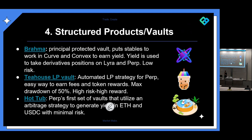Another one is the Teahouse LP vault — one of our partners who built an automated liquidity provision strategy for Perp. It's an easy way for anyone unfamiliar with providing liquidity on Uniswap V3 to simply deposit to the vault and earn a share of trading fees and token rewards. However, this vault has a maximum drawdown of 50%, so it's more of a high risk, high reward vault — providing liquidity on AMMs can be quite difficult, so that's something to keep in mind.